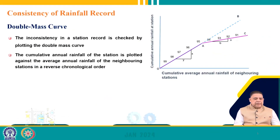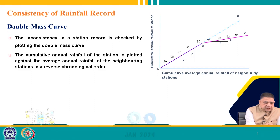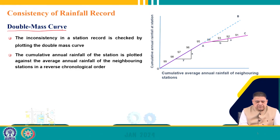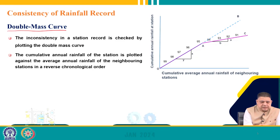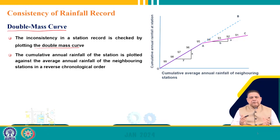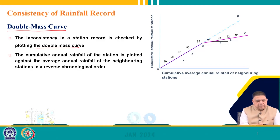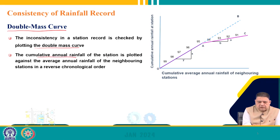Next, we come to the consistency of rainfall record, which is analyzed using a double mass curve. Consistency in a station record is checked by plotting the cumulative annual rainfall of the station against the cumulative average annual rainfall of neighboring stations, in reverse chronological order. In a catchment with several rain gauges, we select the station to analyze — say station X — and collect data from all neighboring stations.